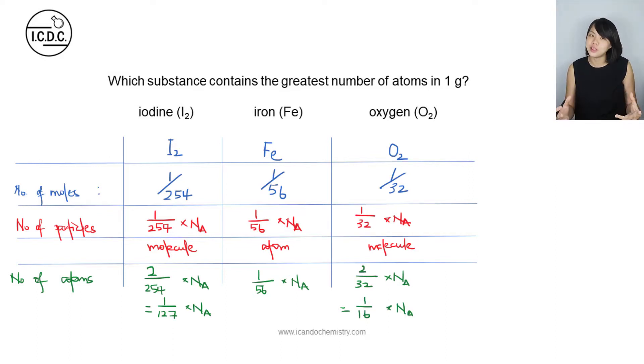So now at this point, have you determined what is the correct answer? They are asking for the greatest number of atoms in the same mass. If we want the greatest number of atoms, we just need to select the one with the smallest denominator.